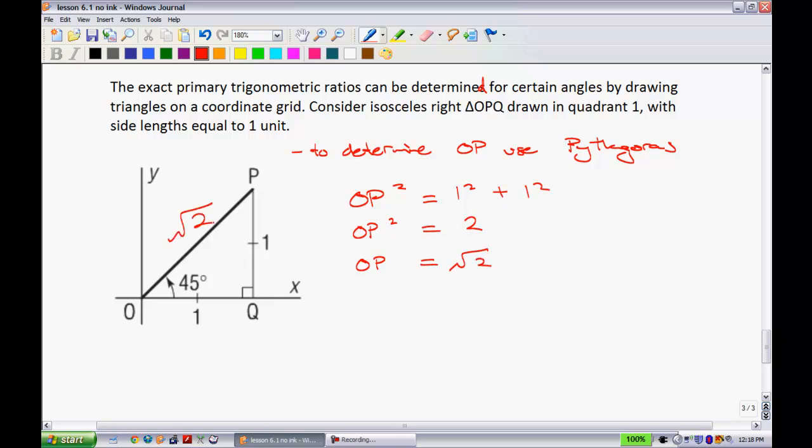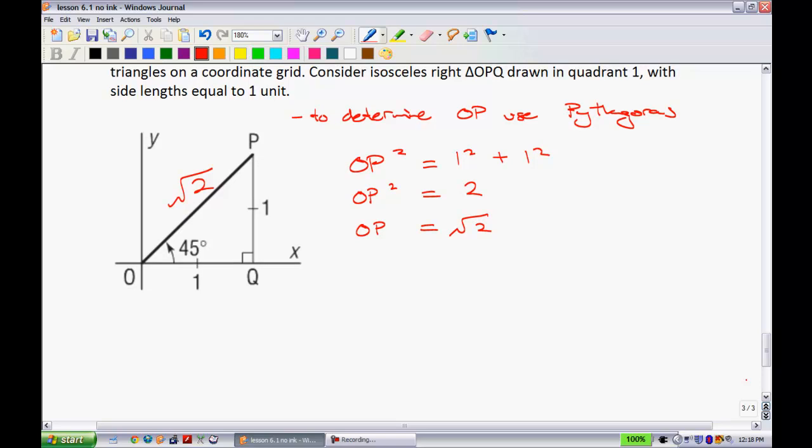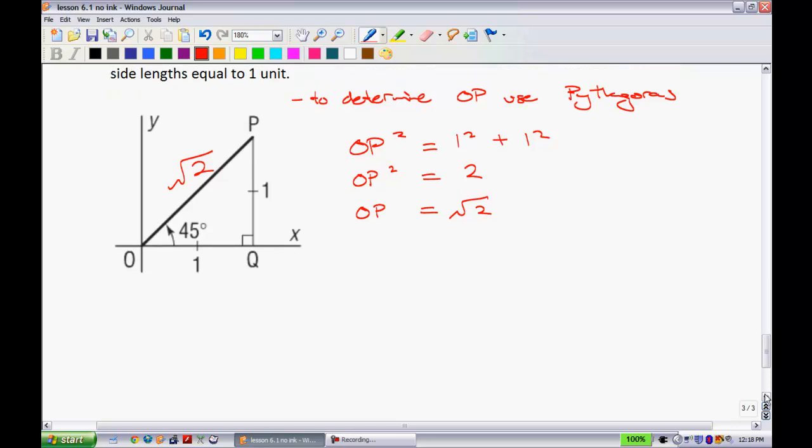So I know now that that side length is root two. A lot of people put the tan of 45 into their calculator, and they're not really sure why the answer spits out one. Well, using these exact value triangles, and this is what I said we're going to build on the next unit quite a bit, we can determine why you get one. So let's take a look at our three different trigonometric ratios in terms of this.